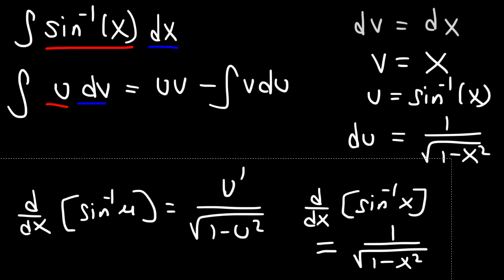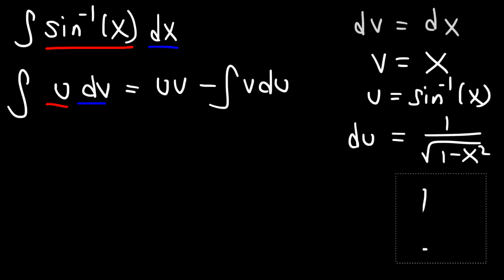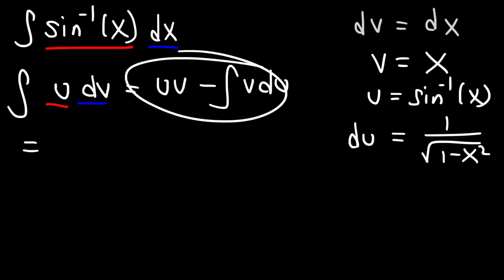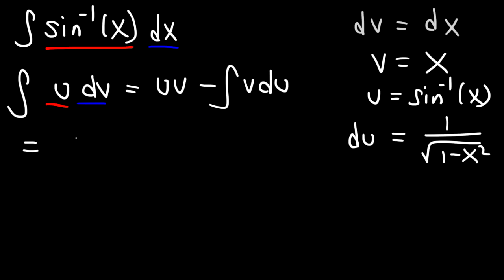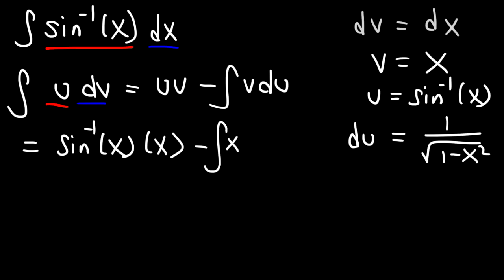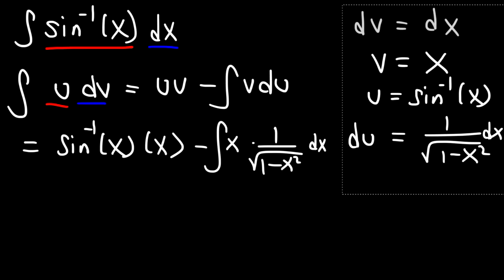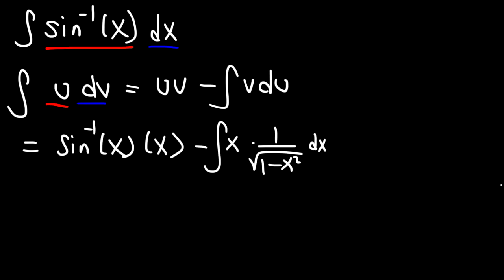Now we have everything we need to apply the integration by parts formula. It's going to be u times v — so arc sine of x times x — minus the integral of v times du, which is x times 1 over the square root of 1 minus x squared, dx.